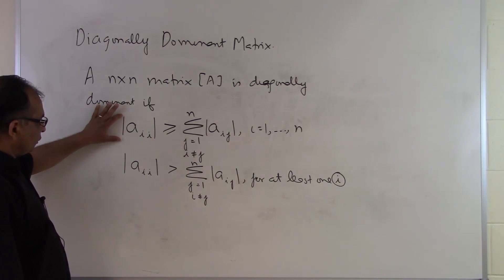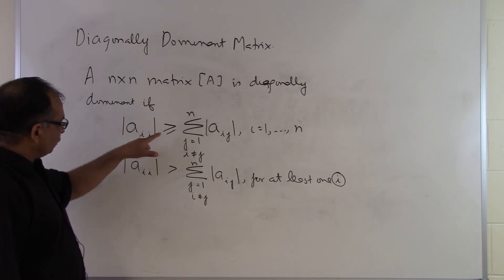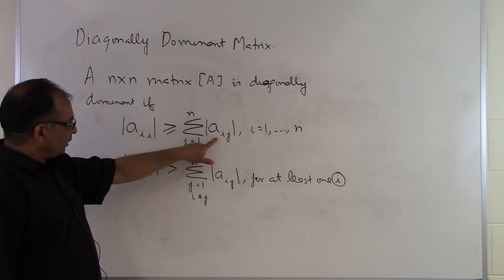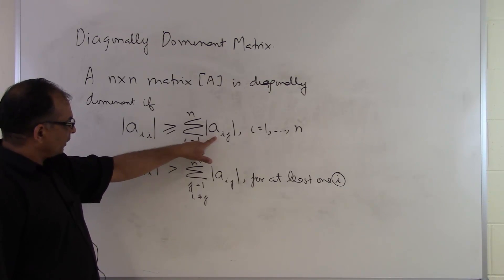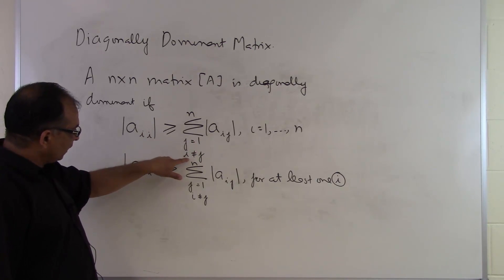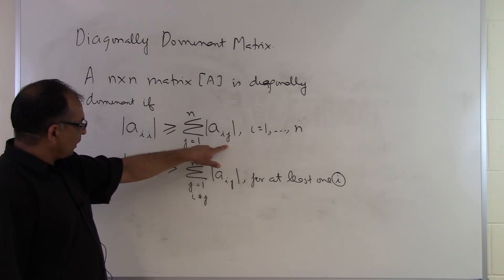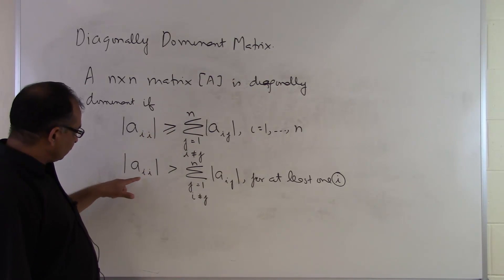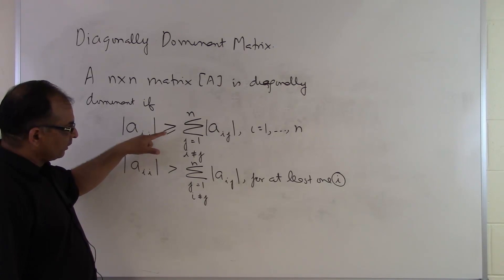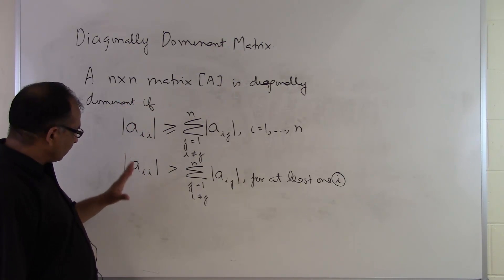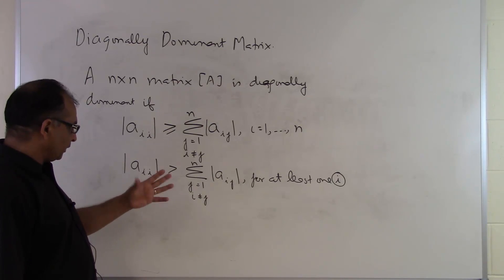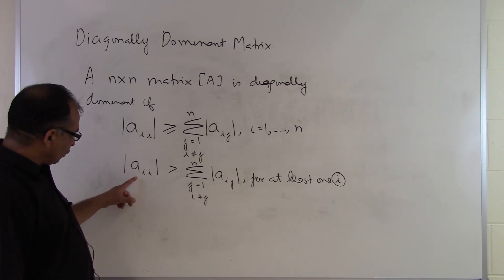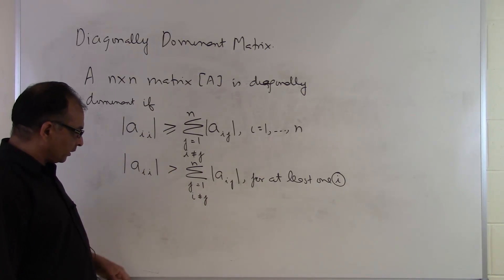The diagonal element a_ii — you take its absolute value, then look at row i and sum the absolute values of all elements in that row except a_ii (that's why i is not equal to j), and check if the diagonal element is greater than or equal to that sum. For at least one row, that inequality must be strictly greater than — that is what makes a matrix diagonally dominant.